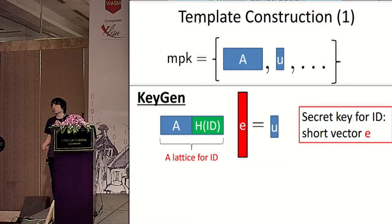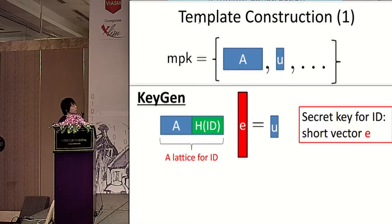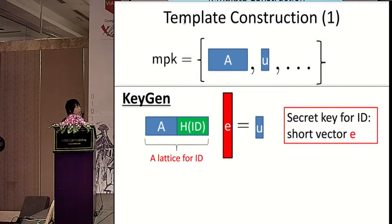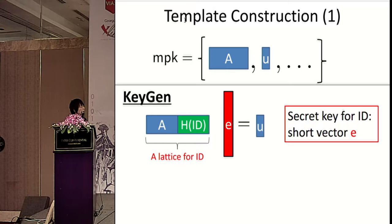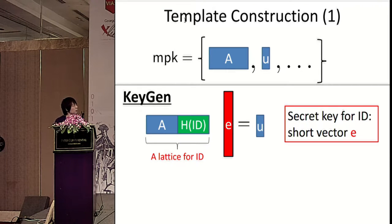For encryption, we create two LWE instances. We have a public LWE instance: U^T · s plus some noise plus a message. And for the other part that binds the ID, we have an LWE instance using the ID-unique lattice. For decryption, if you have vector E, you take the inner product of this vector with the ciphertext. Since the equation [A | H(ID)] · E = U holds, we can recover the U^T · s term. Subtracting gives the message times q/2 with small noise — if the whole noise term is small, M is zero; otherwise, M is one.